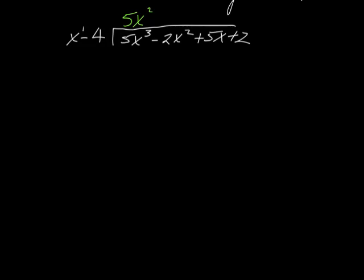Now we multiply 5x squared — just like regular division — times x to the first, which gives us 5x cubed. It must always give you the exact same term above it, or you did something wrong. Then we multiply 5x squared times negative 4, giving us negative 20x squared.